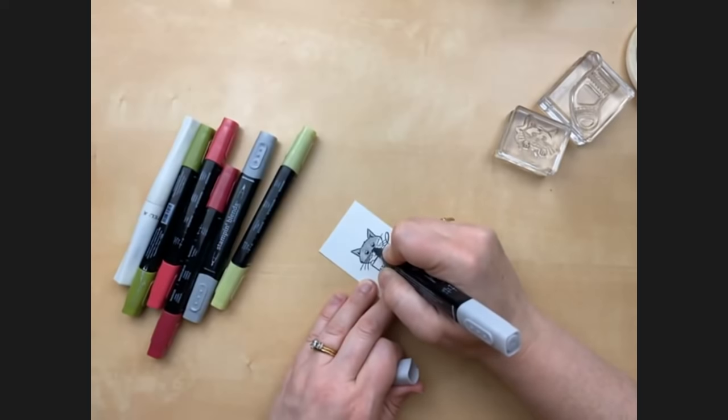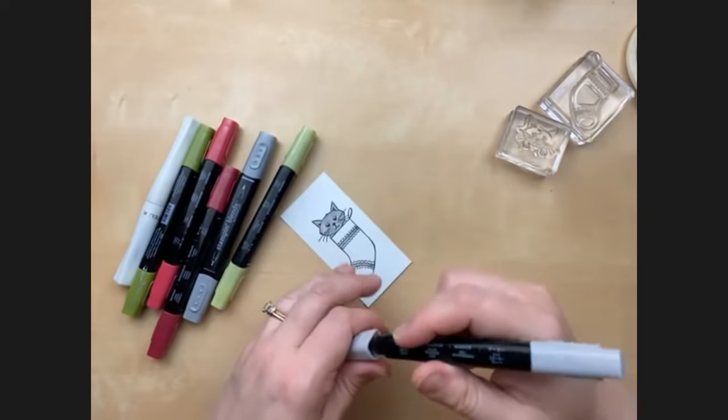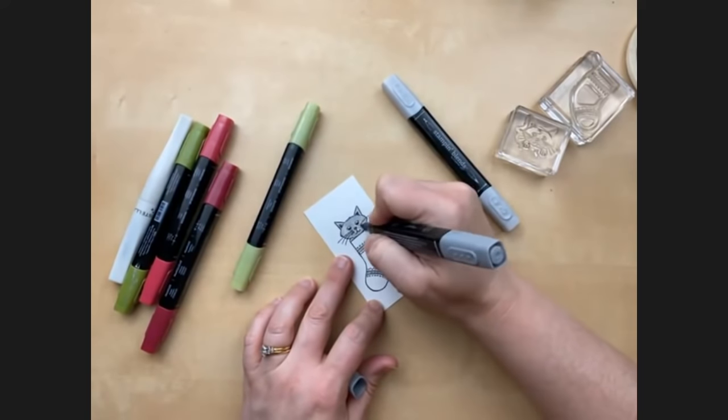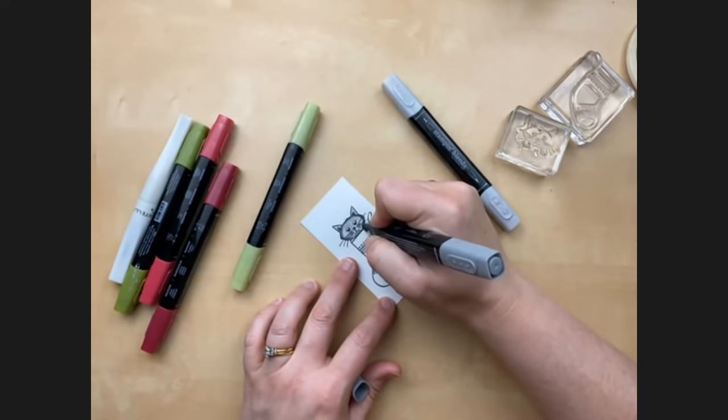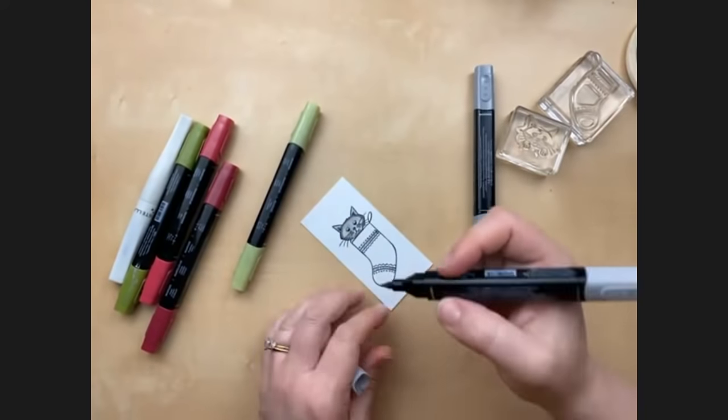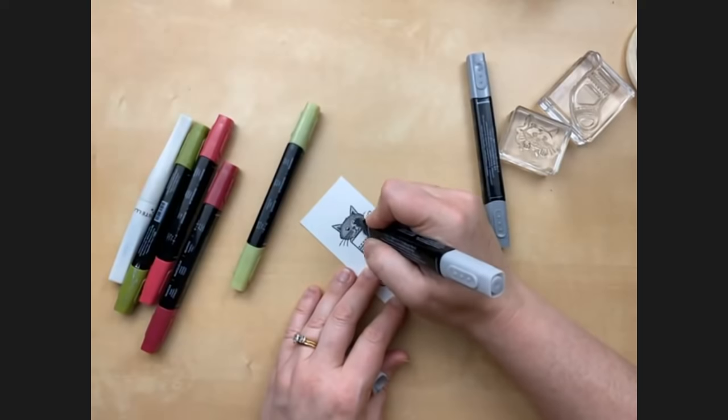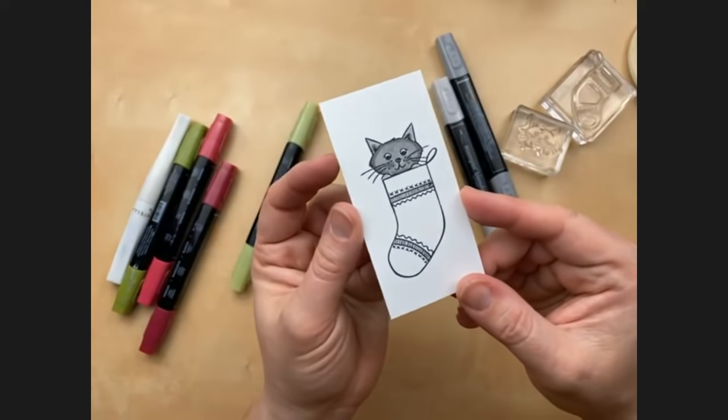So I always do the light color first, and then I add the dark and let it sort of bleed and blend into the light. And sometimes if I feel like it needs a little more blending, I'll come back with the light and blend it a little bit better. So for the cat, I'm doing the light first, and then I'm going to come back with the dark and just add like a little bit around the whiskers and the ears and then come back. I'm trying to be light with my line. I don't think it's working so well.